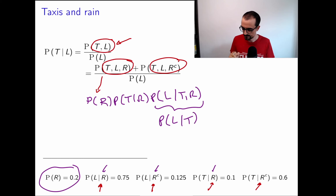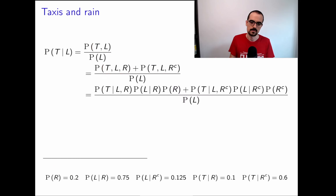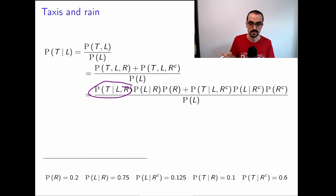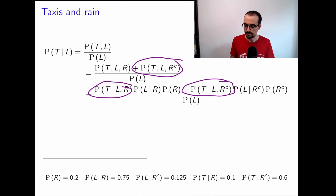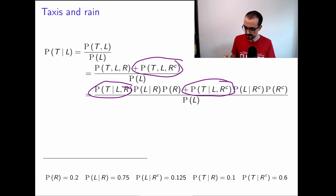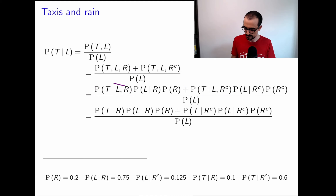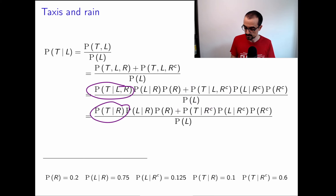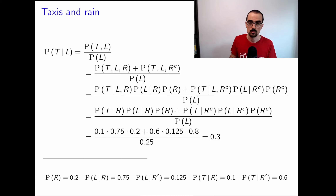We do exactly the same for the other term, applying conditional independence given the complement of R. When we plug in all the numbers, we get P(T|L) = 0.3, which is very different from P(T) = 0.5.